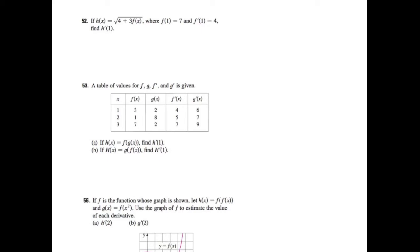In this video I'm going to go over how to do some chain rule problems — chain rule without formulas, given tables and given graphs. In this first problem, number 52, they tell us that h of x equals the square root of 4 plus 3 f of x. I'm going to rewrite that as 4 plus 3 f of x, the whole thing, to the 1/2 power.